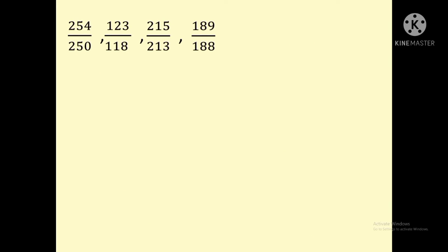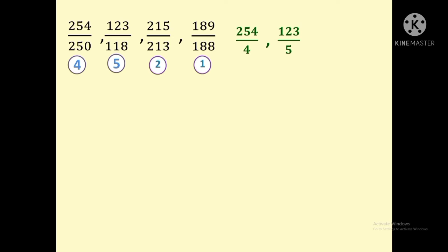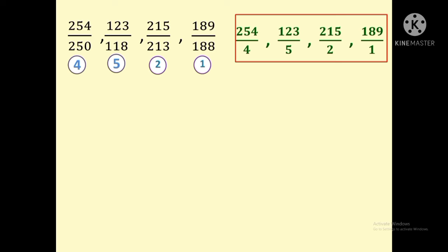Here is another question with improper fractions. To apply the trick, first find the difference between the numerator and denominator. The differences are 4, 5, 2, and 1. Next, change the denominator to the difference to get new fractions: 254 by 4, 123 by 5, 215 by 2, and 189 by 1. Now find the LCM for the new denominators 4, 5, and 2, which is 20. Changing the denominators makes finding the LCM much easier.